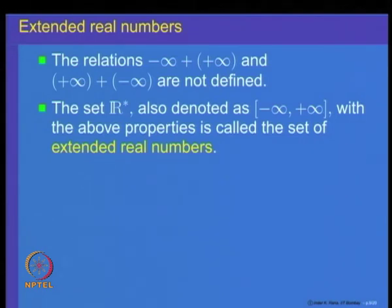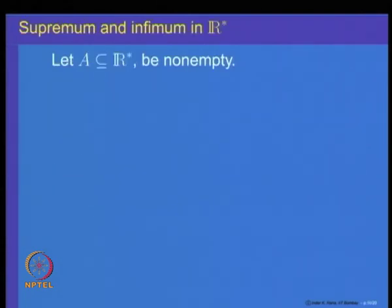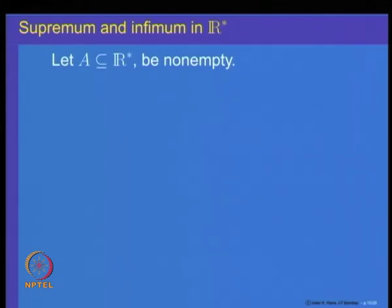Once you are familiar with the order, addition and multiplication on the extended real numbers, we can look at the notion of sequences and also the notion of supremum and infimum on subsets of extended real numbers. Let A be a non-empty subset of extended real numbers. There is a possibility that A is a subset of real numbers only. The completeness property of real numbers says if the set A is bounded above, it must have a least upper bound, namely the supremum.